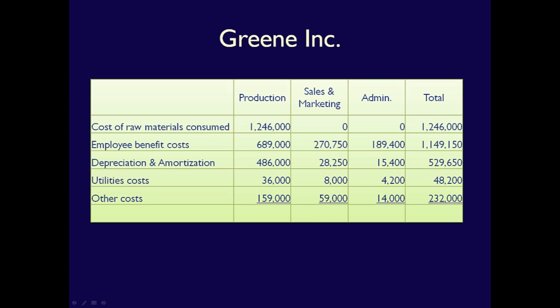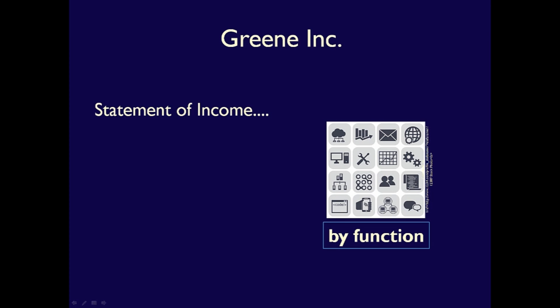You can quickly see that total costs for this business are $3,205,000. What would show on the face of the Statement of Income, Comprehensive Income, if Green Inc. was reporting their expenses by function?